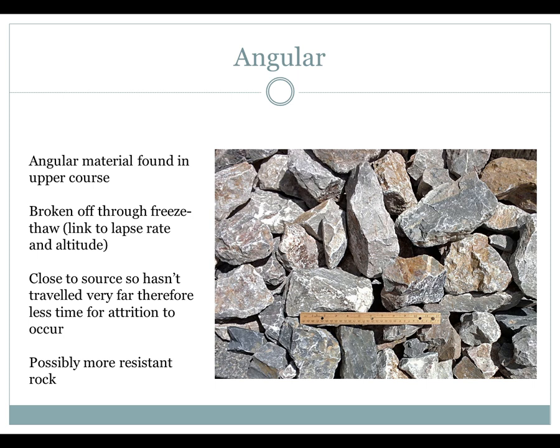So, angular materials — the shape of the pebbles is angular. Found in the upper course; hopefully your processed information backs that up. If you've broken off through freeze-thaw, you can link it to the lapse rate and altitude, bringing in your knowledge from glaciation. A lot of this isn't new to you — it's maybe how you apply it that's new, but you have the knowledge. They're close to the source because they haven't travelled very far, so they're going to be larger and more angular, with the possibility of them being more resistant rock, harder to erode. That's where you can link in the type of geology in Clackmannanshire to see whether it's a more or less resistant rock and how that impacts the shape, size, and rate of erosion.